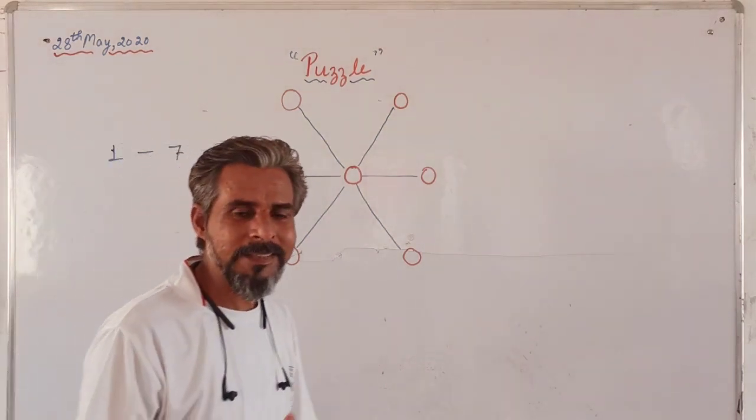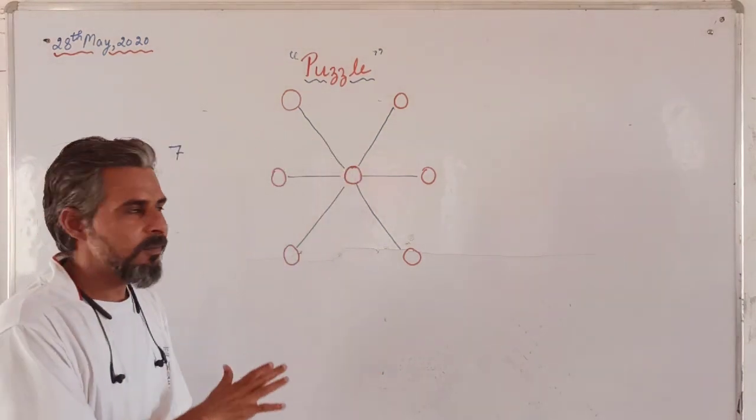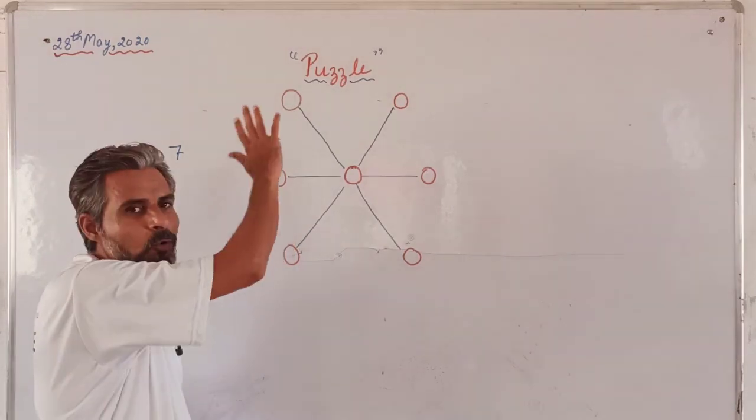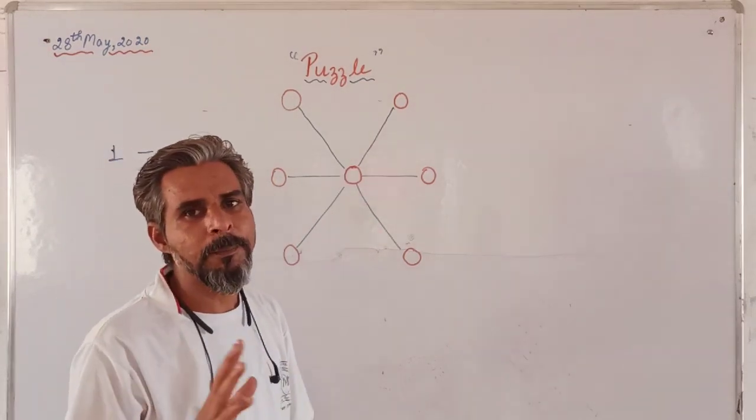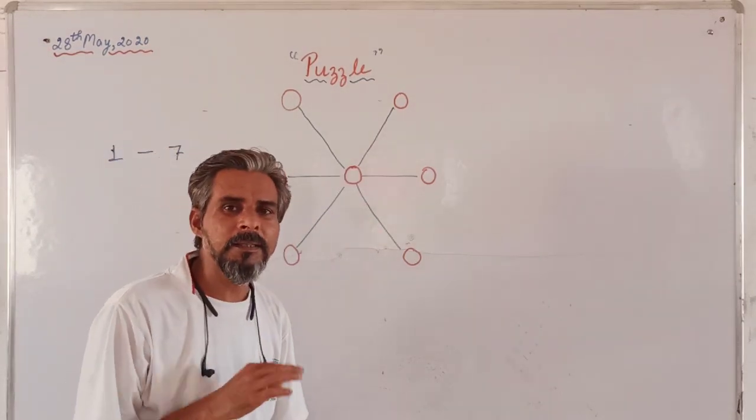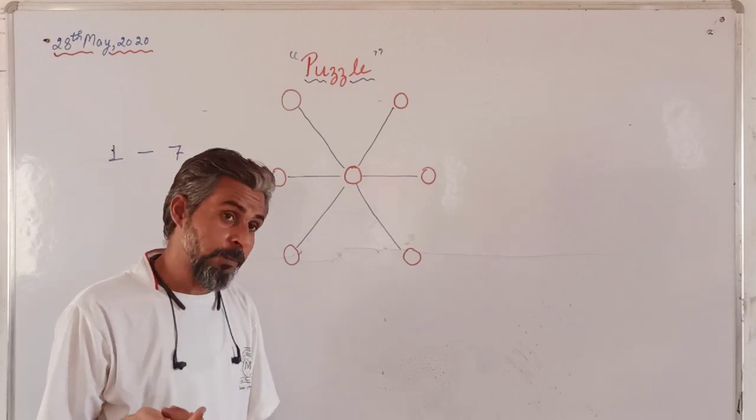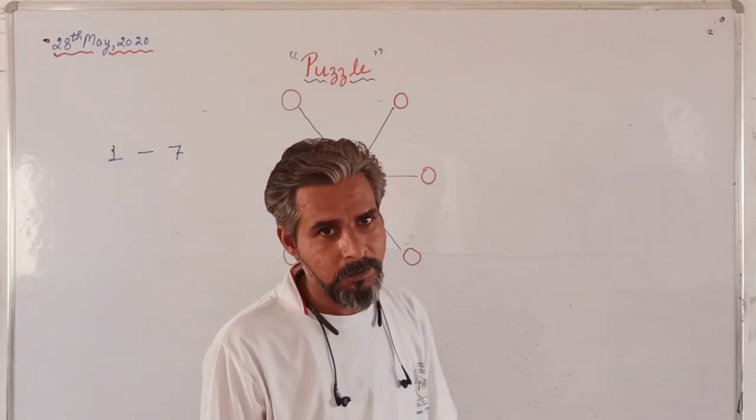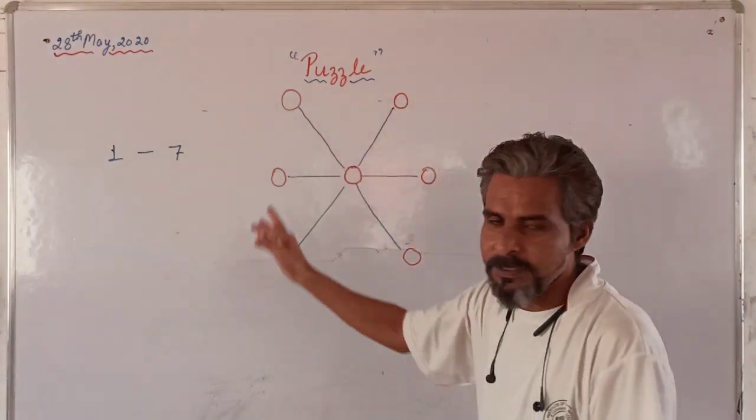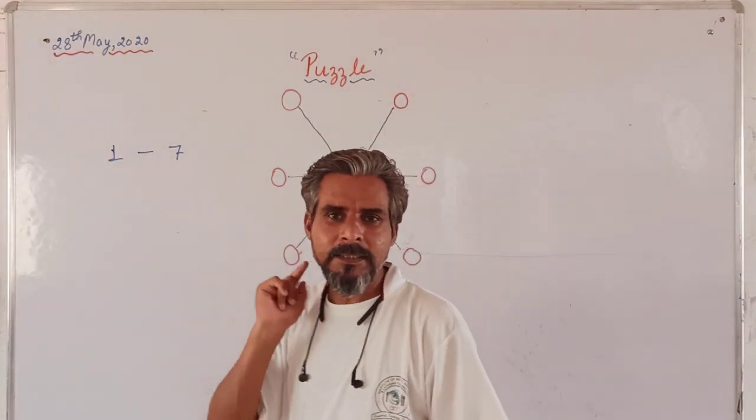1, 2, 3, 4, 5, 6, 7 - seven circles are there. In these seven circles, you will write down numbers from 1 to 7, one in each circle. But the condition is like that...